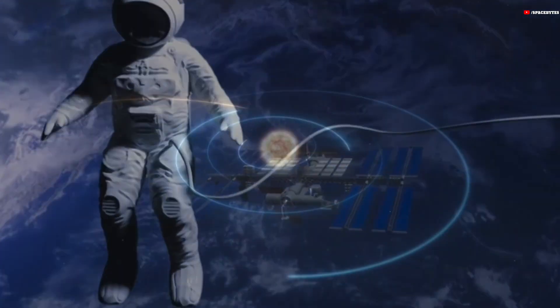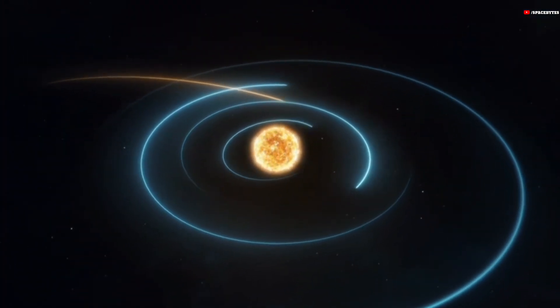Astronomers have also determined its path across the inner solar system. Comet Nishimura will be at its closest to Earth on September 12, 2023, according to NASA.